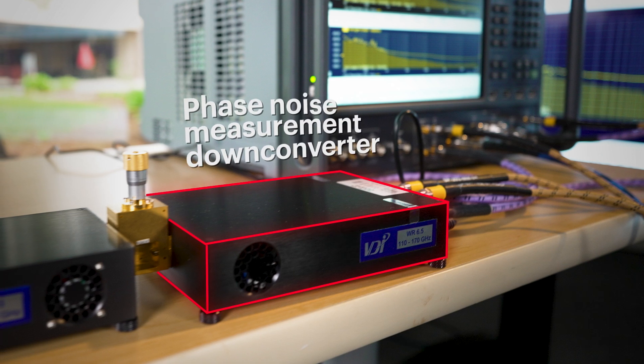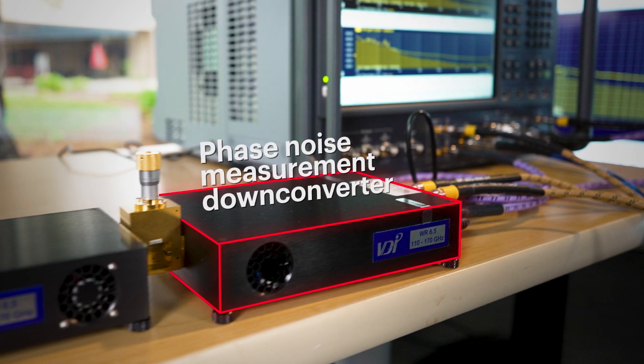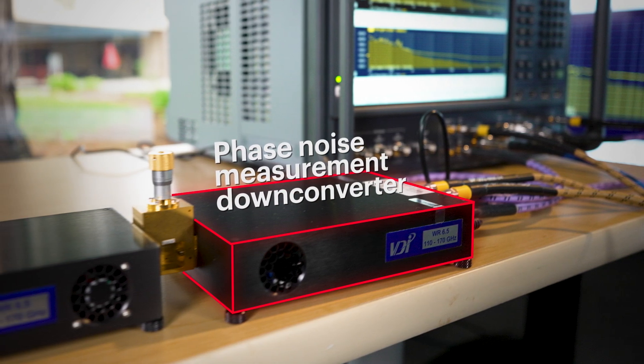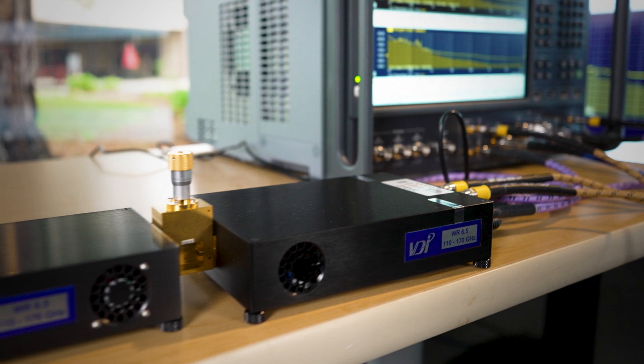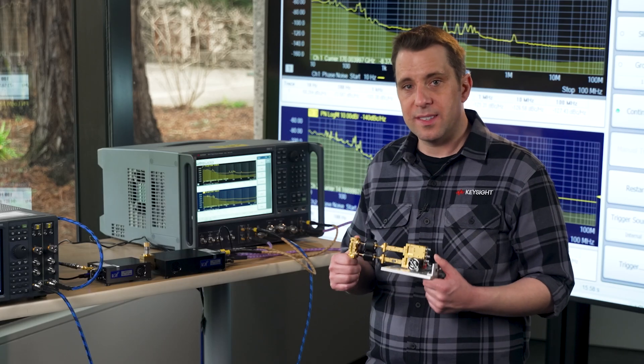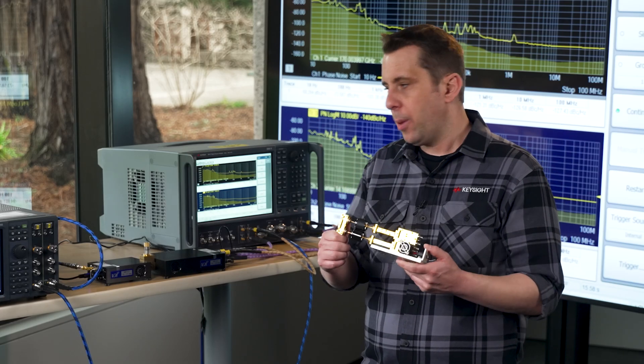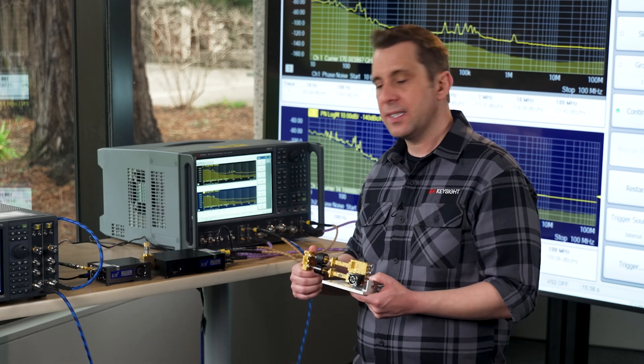I have added the E5051 AW06 phase noise measurement down converter from VDI, which has a power splitter and two independent down converters. It is made up of waveguide components that are similar to what I have here, but all contained in an easy to use self-contained box.